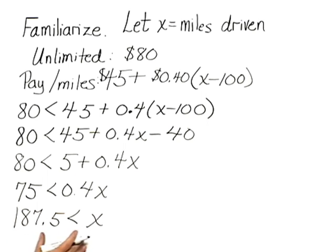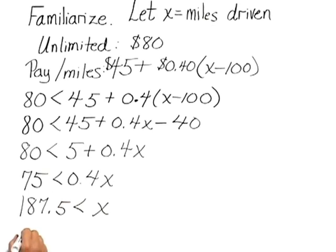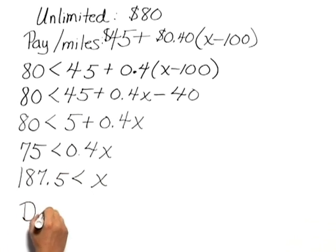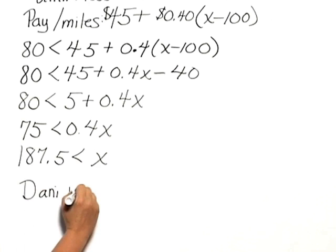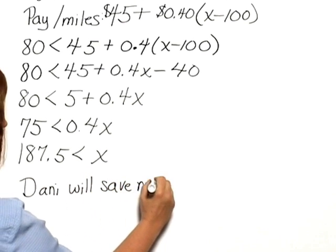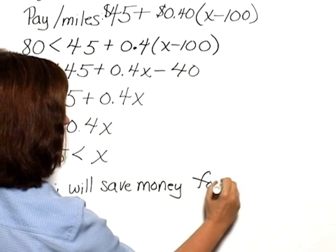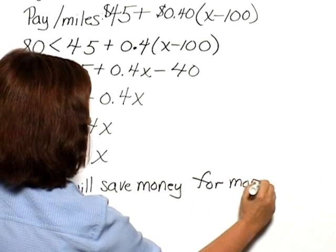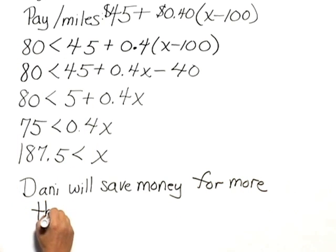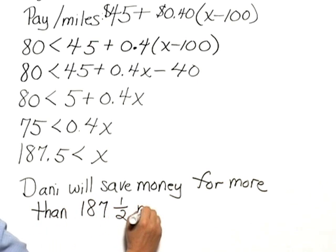And we'd find that this is the solution we're looking for. So we can state that Danny will save money for more than 187.5 miles.